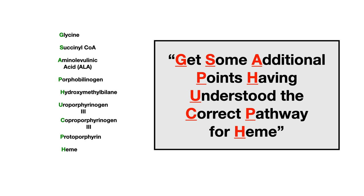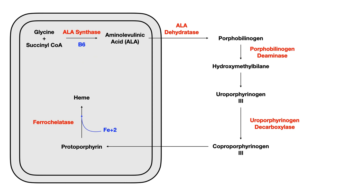So remember the order mnemonic — 'you can get some additional points having understood the correct pathway for heme' — paired with 'going a la cytosol' and 'cop me some mitochondria' for the transition points. At this point in the video, you understand the pathway, all of the enzymes, the order of how the pathway proceeds, and the transition points.